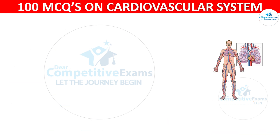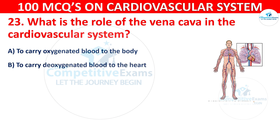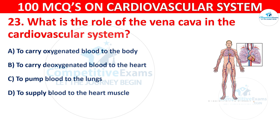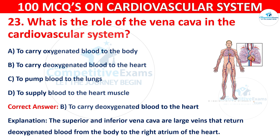Q23. What is the role of the vena cava in the cardiovascular system? Options are: to carry oxygenated blood to the body, to carry deoxygenated blood to the heart, to pump blood to the lungs, or to supply blood to the heart muscle. The correct answer is B — to carry deoxygenated blood to the heart. The superior and inferior vena cava are large veins that return deoxygenated blood from the body to the right atrium of the heart.